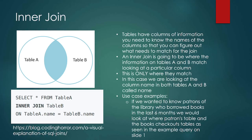For an inner join, tables have columns of information. We need to know the names of the columns so that we can figure out what the match is. If we don't know how the table is put together, we can't write our queries. We have to make sure we are using the correct column names and table names. An inner join is where the information on tables A and B match on a specified column — this is only where they match. For example, to find patrons who borrowed books in the last six months, we would look at the patrons table and the book checkouts table.